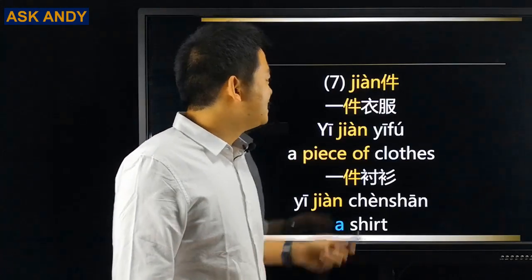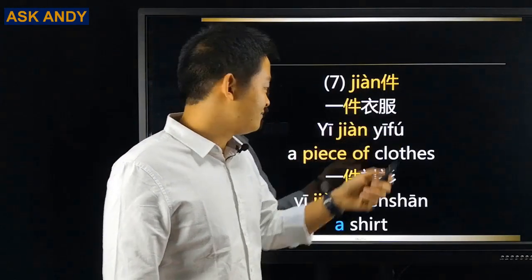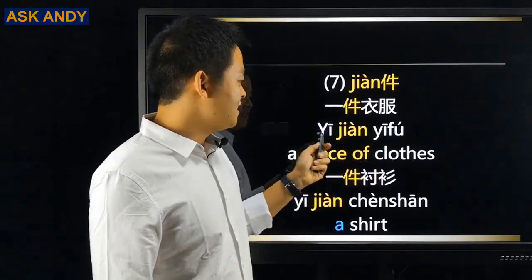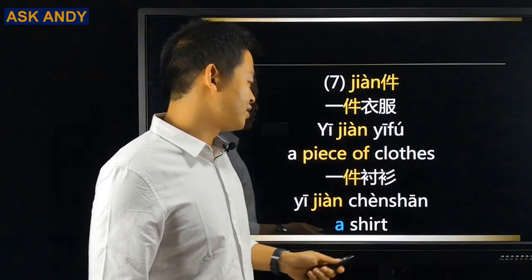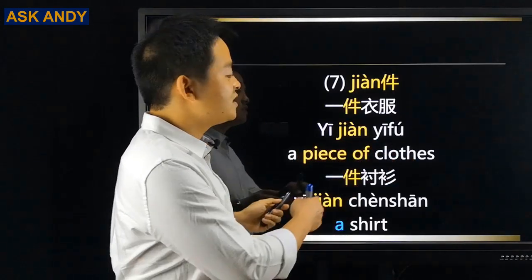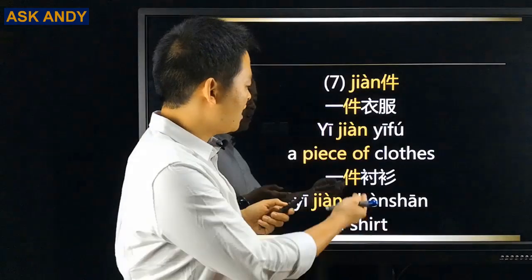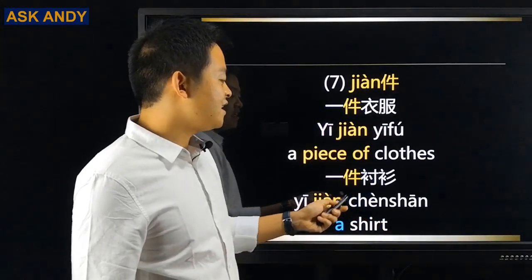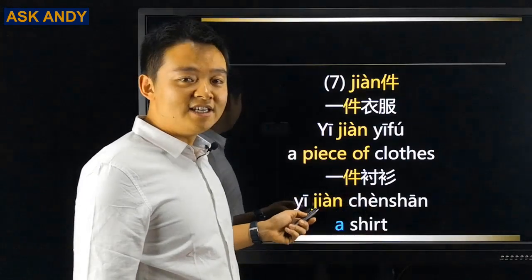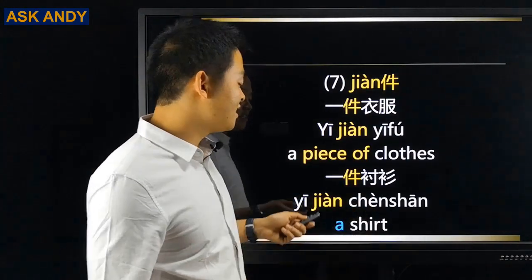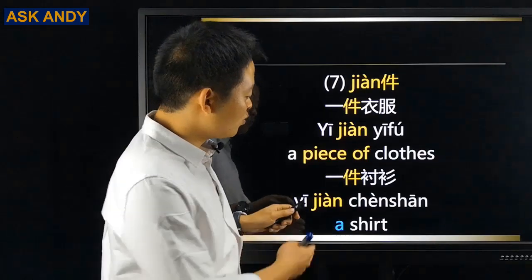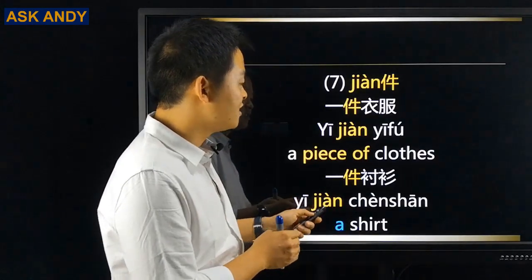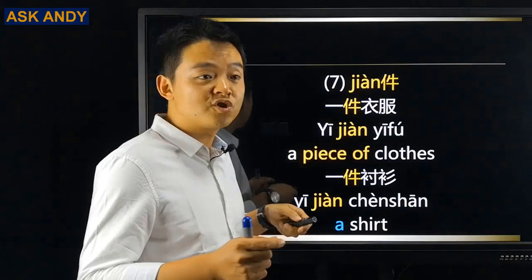Number six: 瓶. For example, 一瓶水 — a bottle of water. And 一瓶果汁 — a bottle of juice. This one is also similar to English, so it is easy. Number seven: 件. For example, 一件衣服 — a piece of clothes. And 一件衬衫 — a shirt. So 件 is the measure word for clothes.